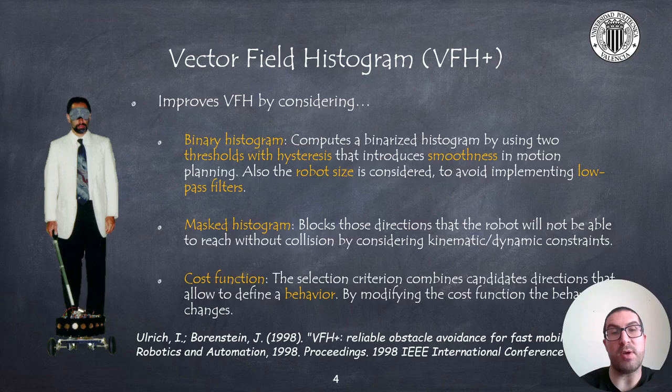It also includes the concept of unreachable directions, considering that the robot has a limited turning radius, due to kinematic or dynamic constraints. Those directions cannot be reached if they have to go through directions that will collide with an object. Finally, it also improves the decision criterion of selecting the correct direction by incorporating a cost function that allows defining a behavior.